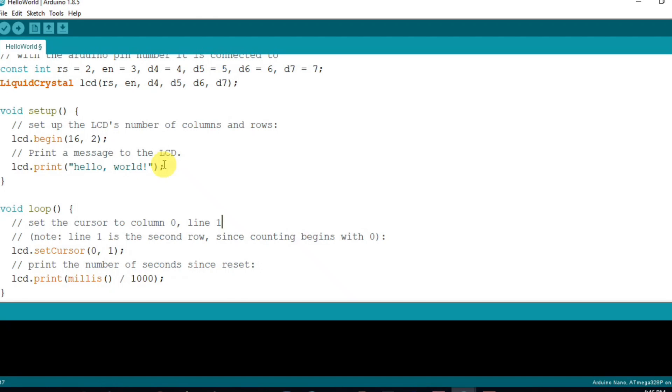For 20x4 display, we need to change the code. Above the void setup section, no need to change the code. Inside the lcd.begin function, set the number of columns and rows. 20 are the columns number and 4 are the number of rows.